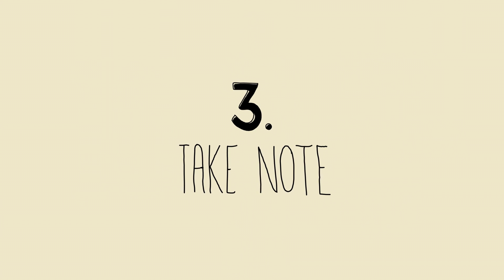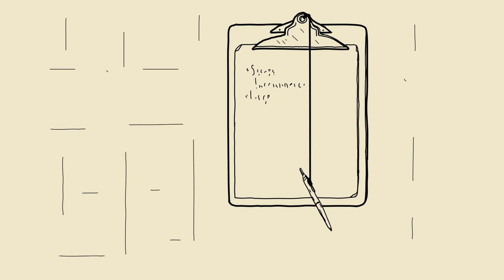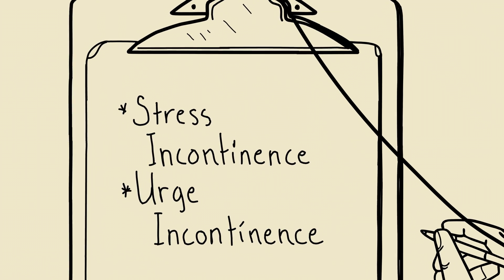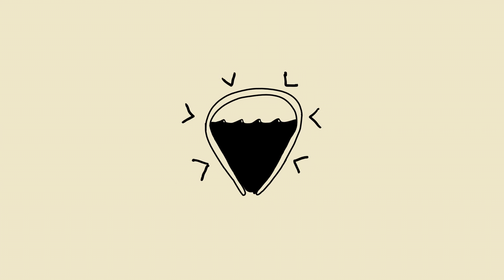Finally, write down what you eat and drink and when you go to the bathroom or leak. This will help you and your doctor determine whether you have stress incontinence or urge incontinence, which happens when your bladder muscles contract at the wrong time.